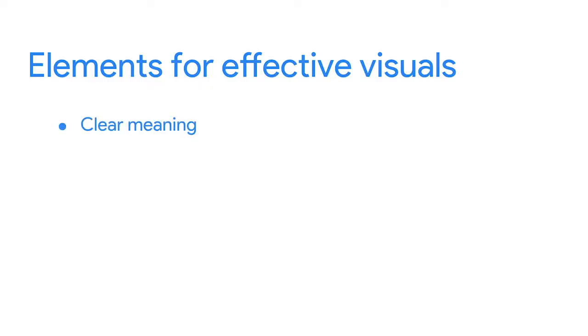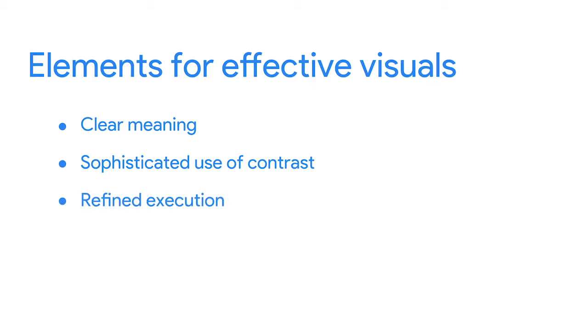Visual journalist Donna Wong proposes that effective visuals have three essential elements. The first is clear meaning — good visualizations clearly communicate their intended insight. The second is a sophisticated use of contrast, which helps separate the most important data from the rest using visual context that our brains naturally look for. The third essential element for effective visuals is refined execution — visuals with refined execution include deep attention to detail using visual elements like lines, shapes, colors, value, space, and movement: the elements of art that we talked about earlier.